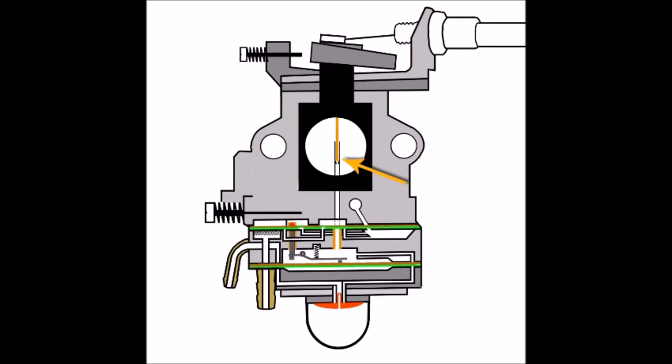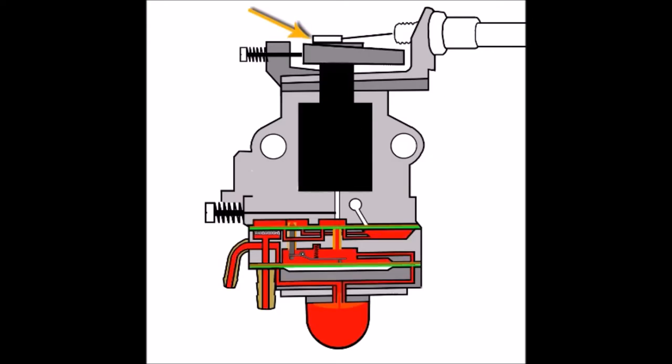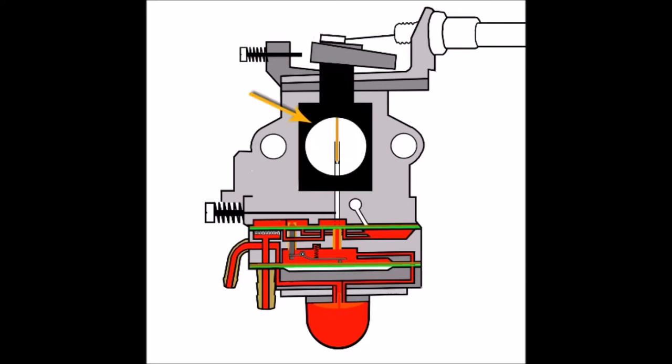When the operator presses the throttle trigger, that tensions this throttle cable which moves the throttle lever and rotates this barrel beneath, revealing this hole. Obviously being the throttle, this regulates how fast or slow the engine will run. When it's open full like this, it's open to maximum airflow going into the engine, so engine revs will be at maximum.